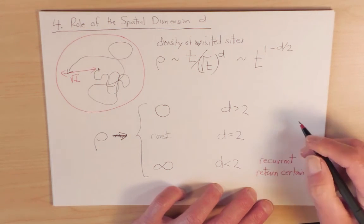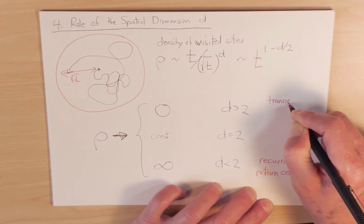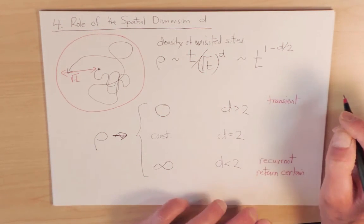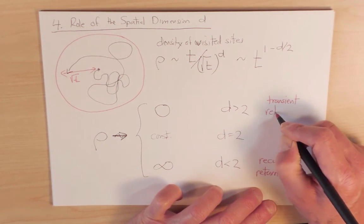Conversely, for d greater than 2, this is what's called the transient regime. And in the transient regime, if you launch a random walker from a given point, because the density of points is going to 0, it's not certain that it's going to return to its starting point. So here, return is uncertain.